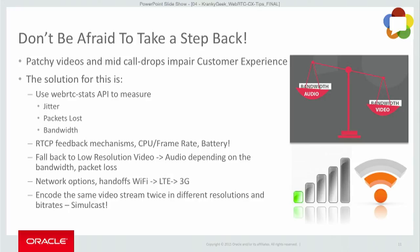There is a good WebRTC Stats API that can measure jitter, packet loss, bit rate, and bandwidth. RTCP feedback mechanisms let you calculate the quality of your stream. Frame rate tells you if the device CPU can handle the video, and also battery — if the battery is really low, you can trigger a message or fall back to audio. You can switch from HD video to low-resolution video or audio depending on various factors, aggregating this data and triggering messages for the application to provide a seamless experience.